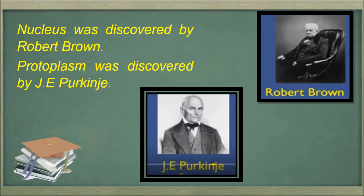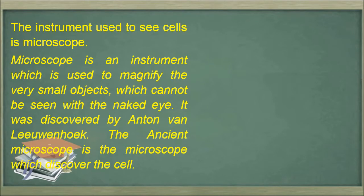The nucleus was discovered by Robert Brown. So, cell was discovered by Robert Hooke, whereas the nucleus was discovered by Robert Brown. Later on, protoplasm was discovered by J.E. Purkinje. We will be studying about cell, nucleus, and protoplasm, and the instrument used to see a cell is called a microscope.